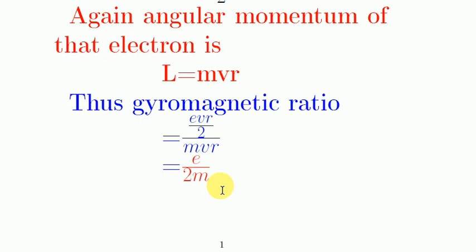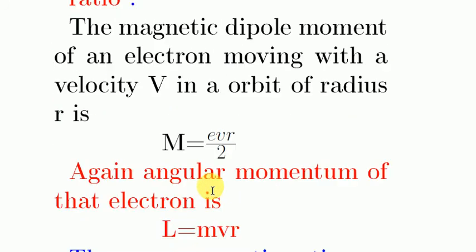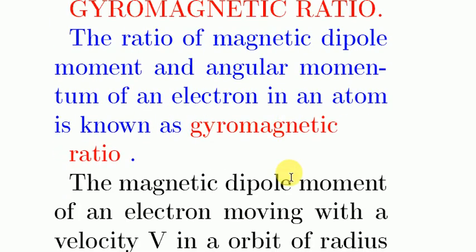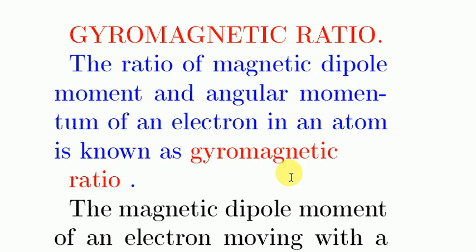So, this is a constant and the expression of gyromagnetic ratio is e by 2m, and the definition is what we already discussed. Thank you so much for watching this video.